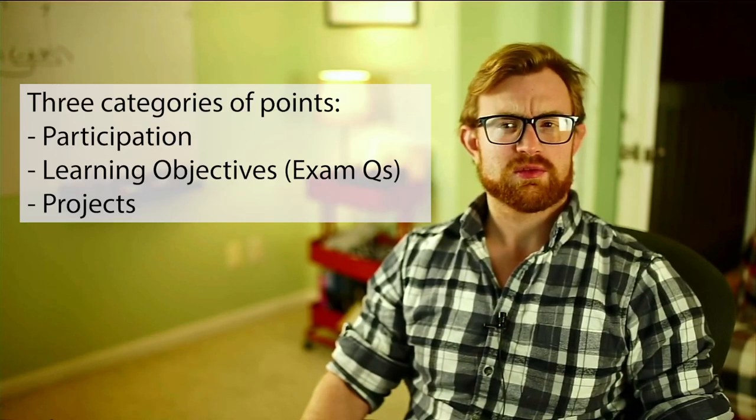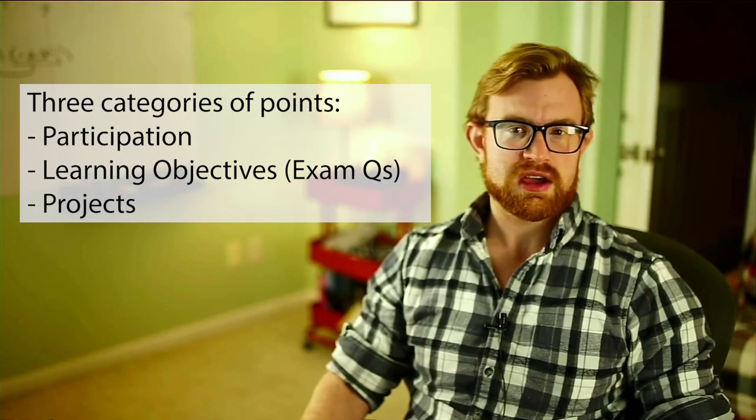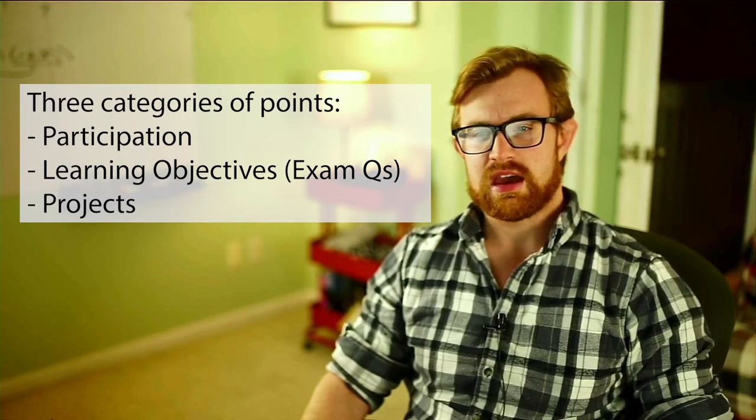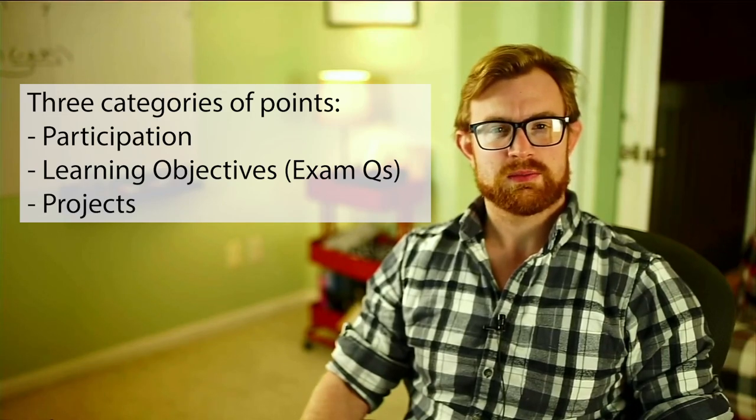Now I want to talk to you about a few logistical points. All this information is in the syllabus, which outlines it even more precisely, and you should always be looking there for the most precise wording and up-to-date information. Broadly speaking, there are going to be three categories of points in this course: participation, projects, and exam questions. Let's talk about projects and exams first.